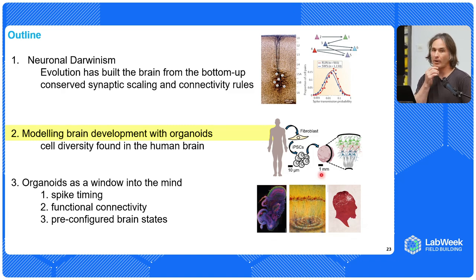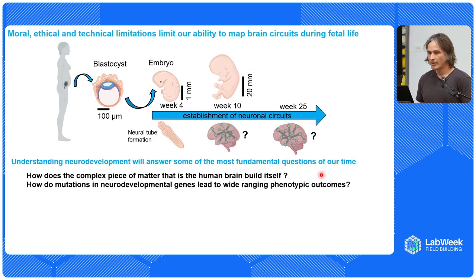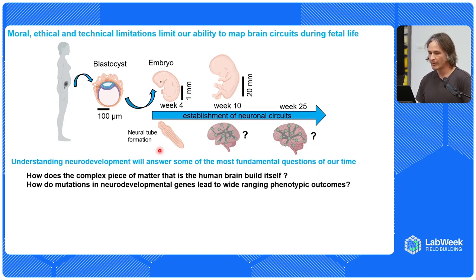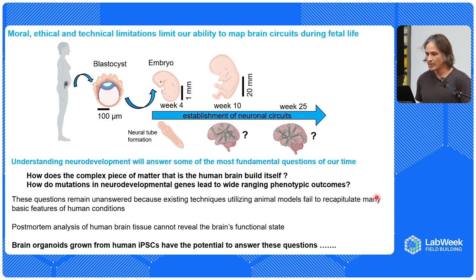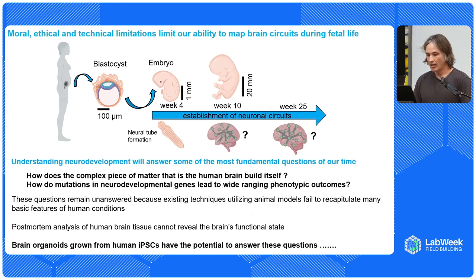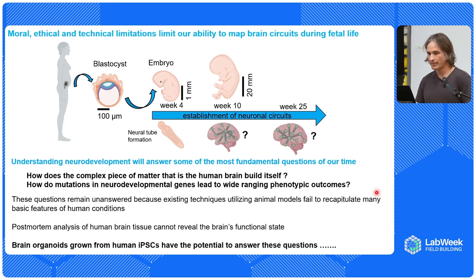I'll now touch on how we can model brain development with organoids. Moral, ethical, and technical limitations limit our ability to map brain circuits during fetal life. Understanding neurodevelopmental processes will answer fundamental questions: how does the brain, the most complex piece of matter, build itself? And how do mutations in neurodevelopmental genes lead to wide-ranging phenotypic outcomes? These questions remain unanswered because existing techniques using animal models fail to recapitulate basic features of human conditions, and post-mortem analysis cannot reveal the brain's functional state. We believe that brain organoids grown from human induced pluripotent stem cells have the potential to answer some of these questions.